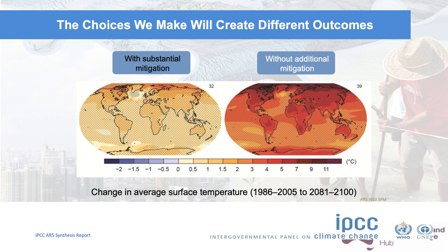That is a very different planet. No humans have lived on a planet like that, ever. Humans haven't actually lived on a planet like that even on the left-hand world, but on the right-hand side the planet is very, very different. Society will very likely be destroyed.